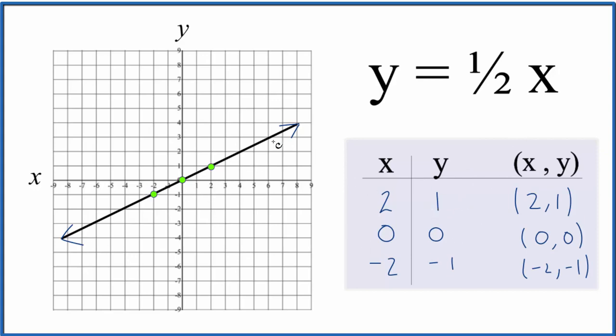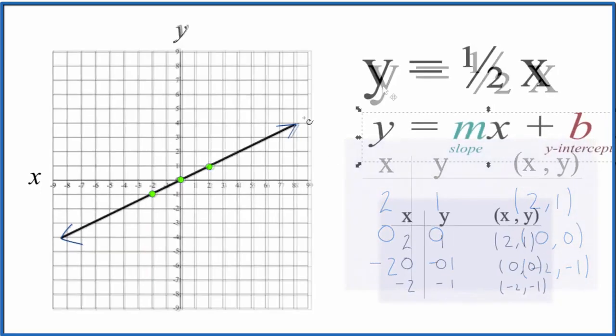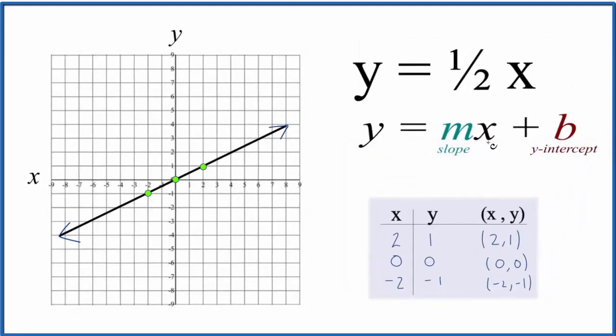Let's check this with slope-intercept formula. So we have y equals mx plus b. Here's our m, and here's our x. And we don't have a b up here, so b is going to be zero. That's where this line crosses the y-intercept, right here, zero.